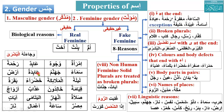'Abidatun — feminine, because of ta marbuta. Ardun — feminine, linguistic reason. Laylatan — feminine, ta marbuta. Al-mala'ikatu — feminine. Layla means night. Al-mala'ikat means angels. 'Abidat is a woman worshiper. Ard is earth. Sama is sky. Jahannam you know.